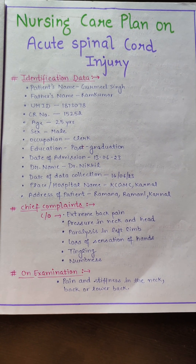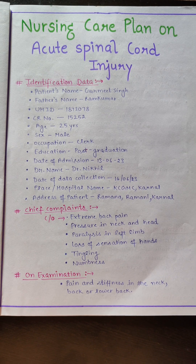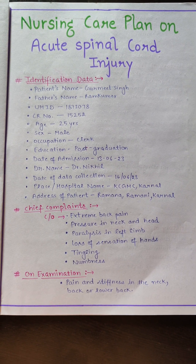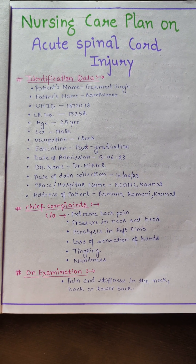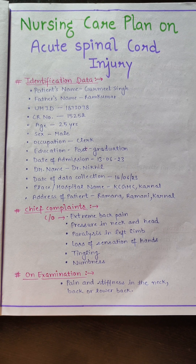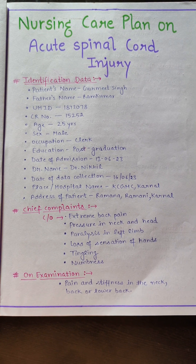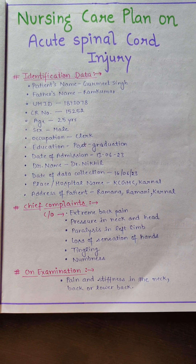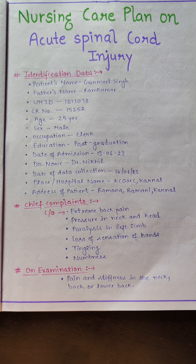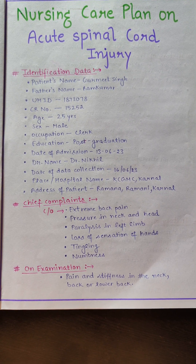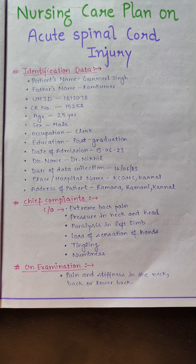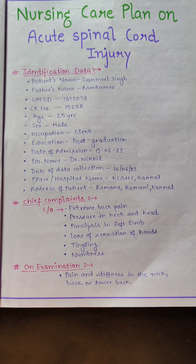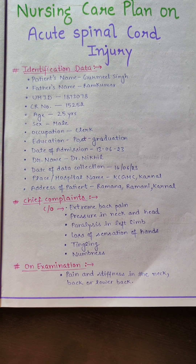First of all, we will write identification data about the patient: the name of the patient, his father's name, UHID number, CR number, age and sex, occupation, education, date of admission, and doctor's name.